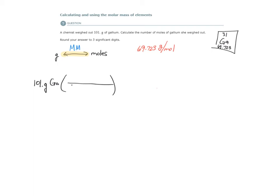and grams will go on the bottom. 69.723 grams per one mole of gallium. Grams of gallium. If I check my units, grams cancels, and moles of gallium is what I'm left with.